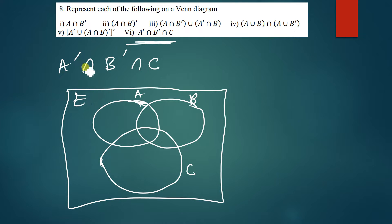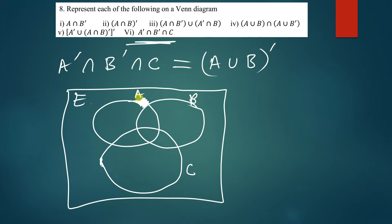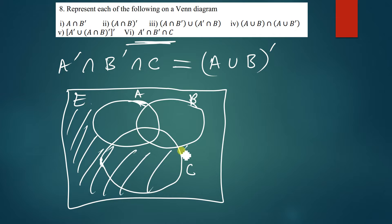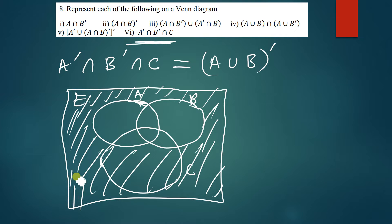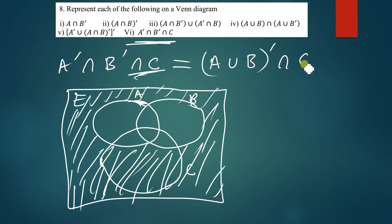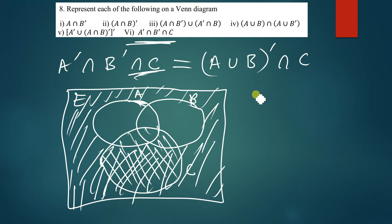We can simplify A complement intersection B complement using De Morgan's law — that gives (A union B) complement, meaning we shade outside A union B. Then we intersect this with C, so we add C to the diagram and shade C. Where the lines cross between the outside-of-(A-union-B) region and C — that's where our solution lies.